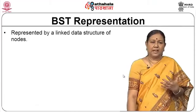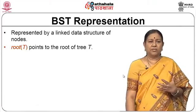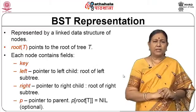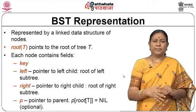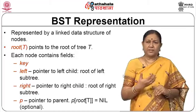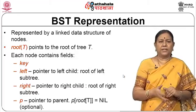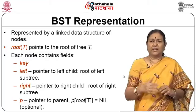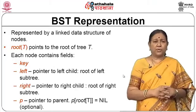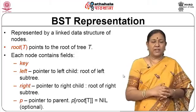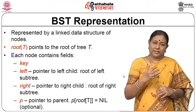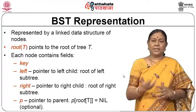In the BST linked representation, the root pointer t points to the root of the tree. Each node contains fields: key, left (pointer to left child/root of left subtree), right (pointer to right child/root of right subtree), and optionally P — a pointer to the parent. The parent is null for the root node. The parent pointer is optional and is mainly used for insertion and deletion operations.